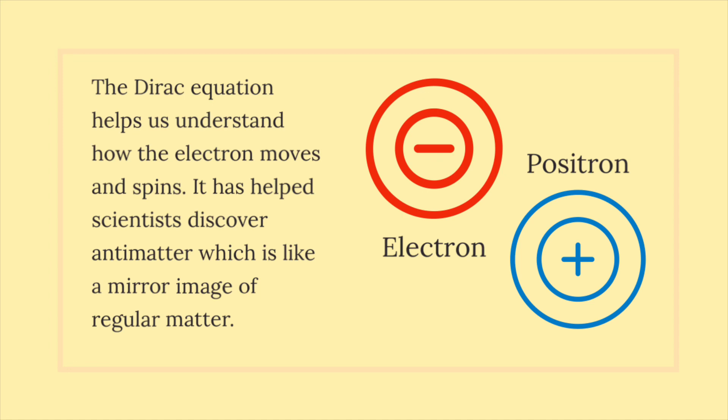The Dirac equation helps us understand how the electron moves and spins. It has helped scientists discover antimatter, which is like a mirror image of regular matter.